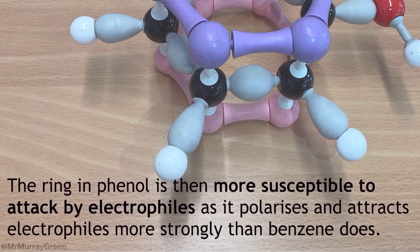Our third and final point we need to make is that the ring in phenol is now more susceptible to attack by electrophiles. This is because it polarizes and attracts electrophiles more strongly than benzene does. This point is kind of a double whammy of two or three separate points that carry the same meaning in several of the OCR-A Mark Schemes.